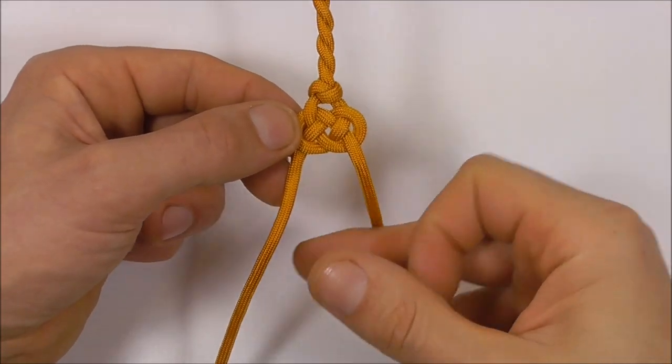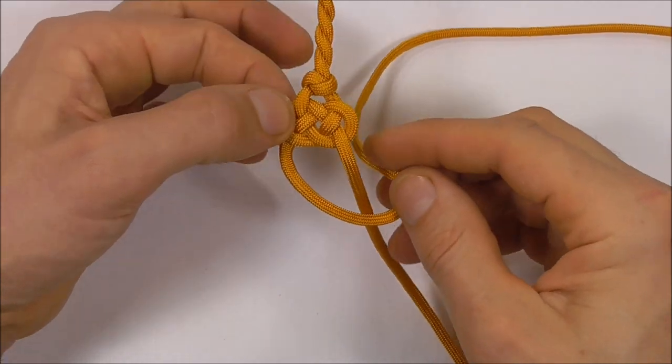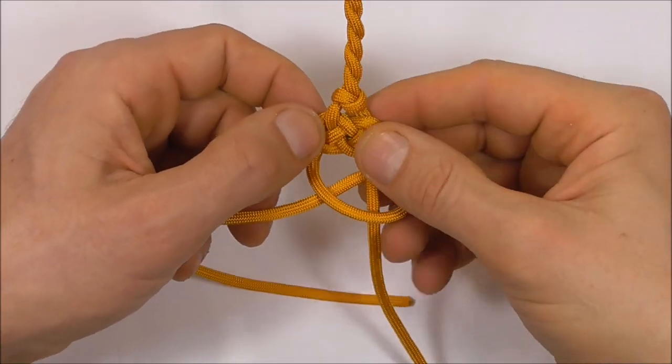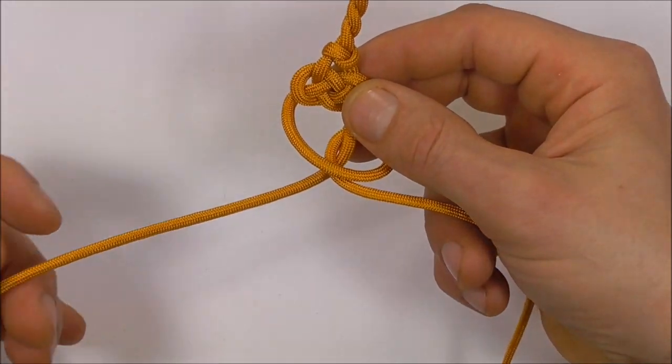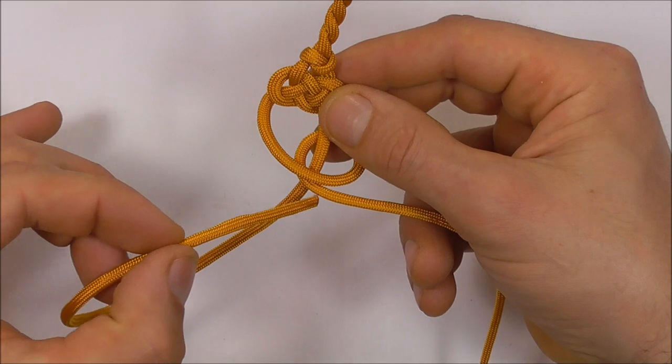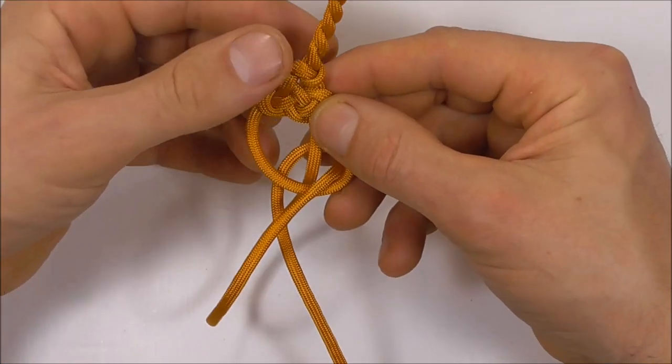The next stage is to tie another snake knot. Take the left strand over the right and then all the way around. Switch these two strands over and then feed that left strand down through the right loop.